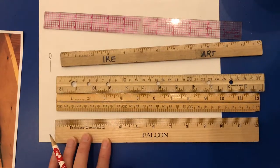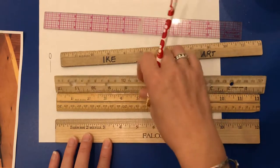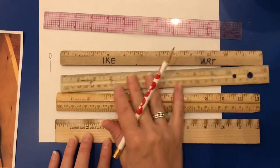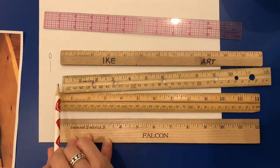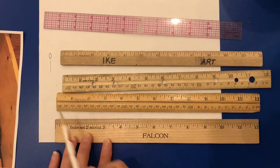So you have to kind of be careful, because some rulers, the zero starts at the end, and other rulers, the zero comes in.